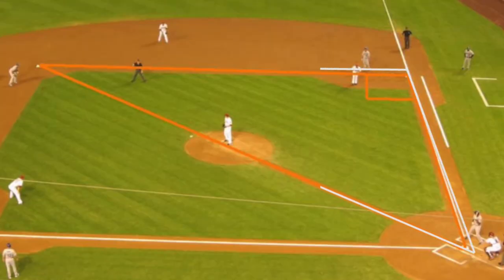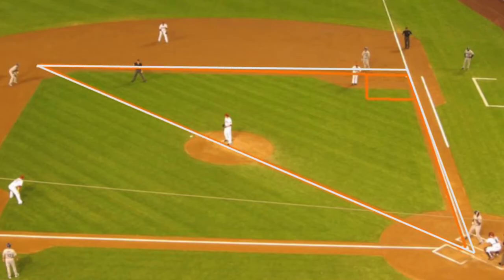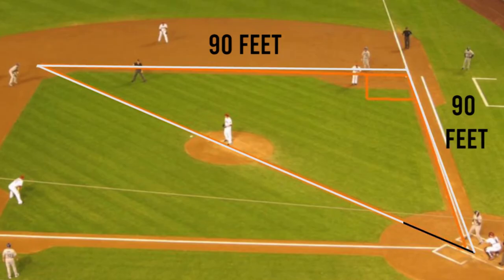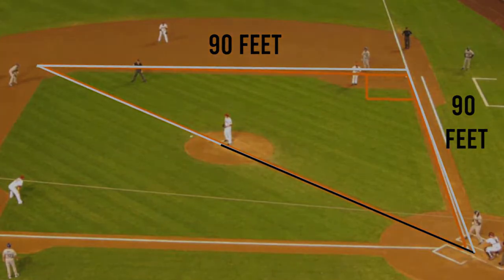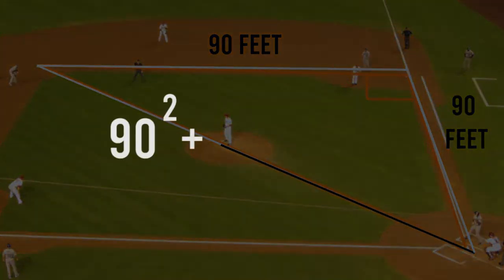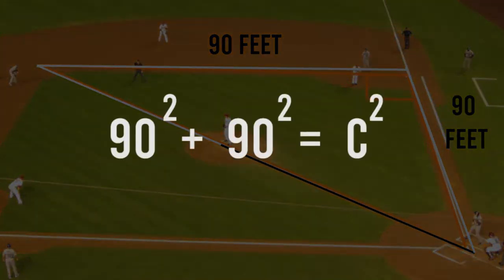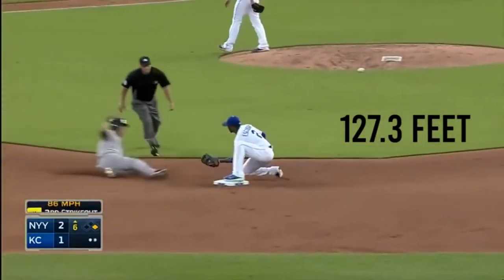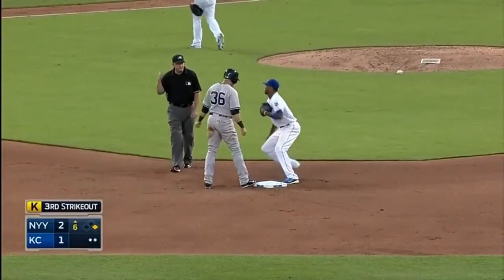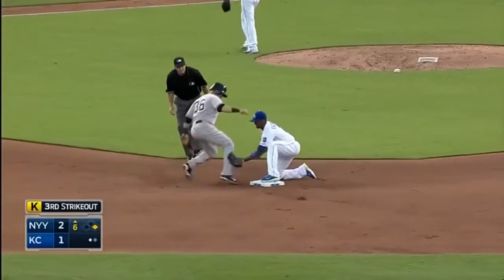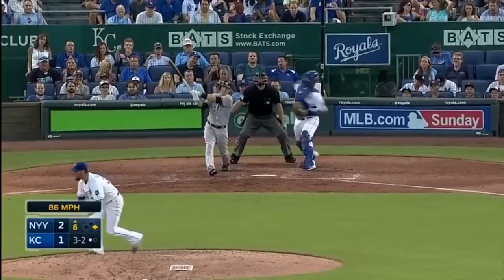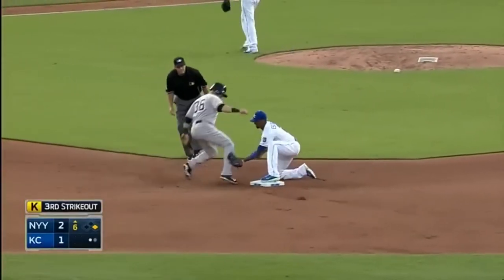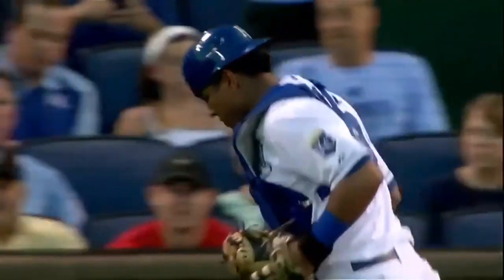The right triangle formed would be with half of the infield, where the legs of the triangle are the base parts of 90 feet each, and the hypotenuse is from the home plate to second base. The hypotenuse can be found by solving the equation 90 squared plus 90 squared equals C squared. Solving for C will show us that the throw is about 127.3 feet. This information is useful because it gives coaches an idea of how hard the catcher needs to throw the ball accurately in order to throw a runner out.